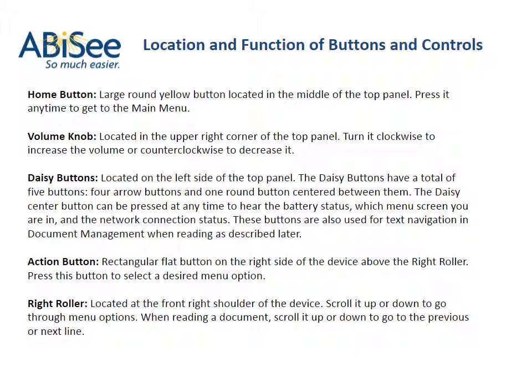The Daisy buttons have a total of five buttons: four arrow buttons and one round button centered between them. The Daisy center button can be pressed at any time to hear the battery status, which menu screen you are in, and the network connection status. These buttons are also used for text navigation and document management when reading, as described later.